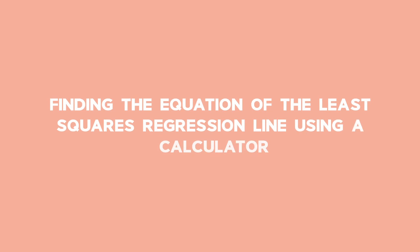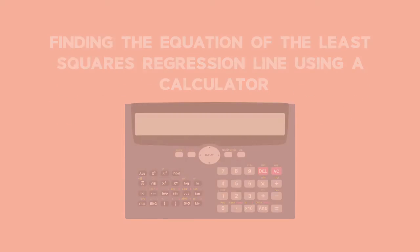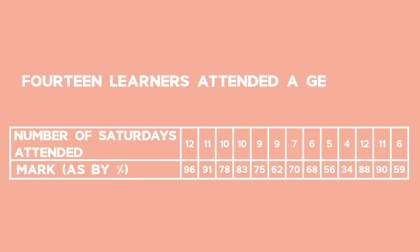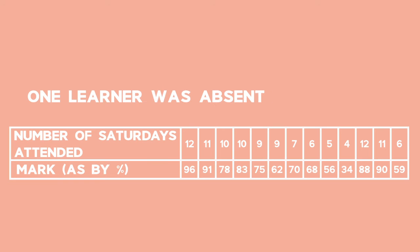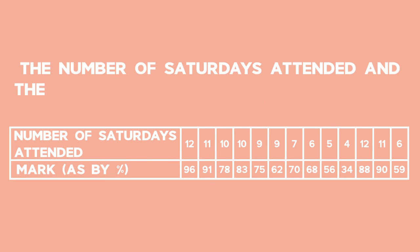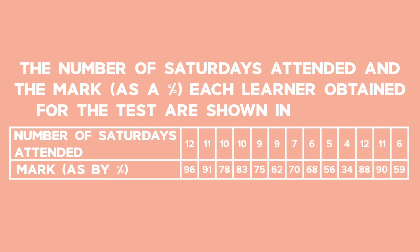Example 2. Finding the equation of the least squares regression line using a calculator. 14 learners attended a geometry training course spread over 12 Saturdays. Learners wrote a geometry test at the end of the course. One learner was absent for the test. The number of Saturdays attended and the mark as a percentage each learner obtained for the test are shown in the table.